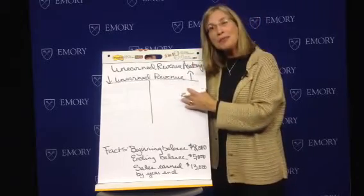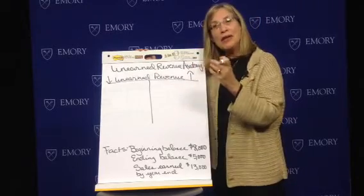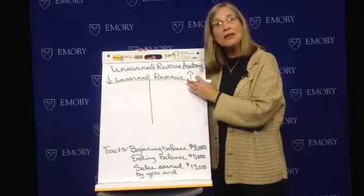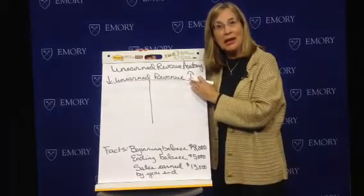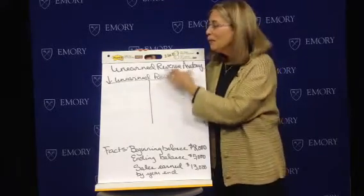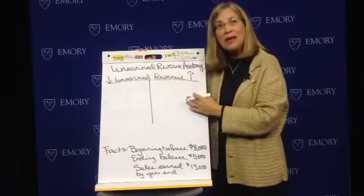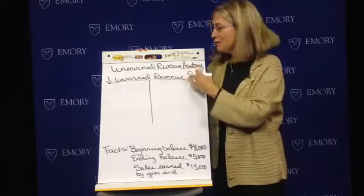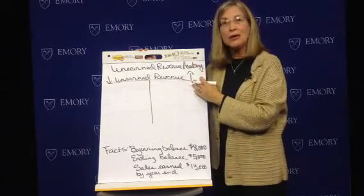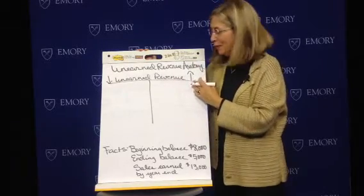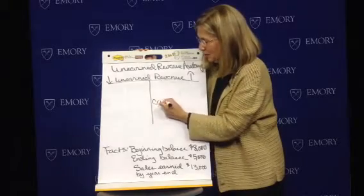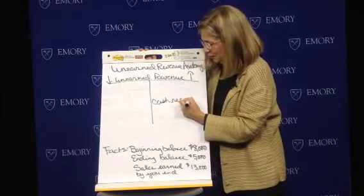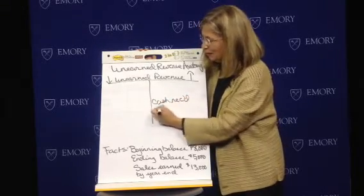So we have to put the responsibility for their cash in a liability account. When we receive their cash, we debit cash and we credit unearned revenue. This is cash received from customers.